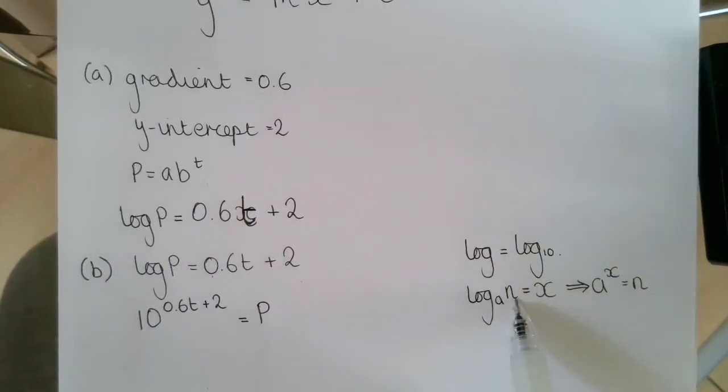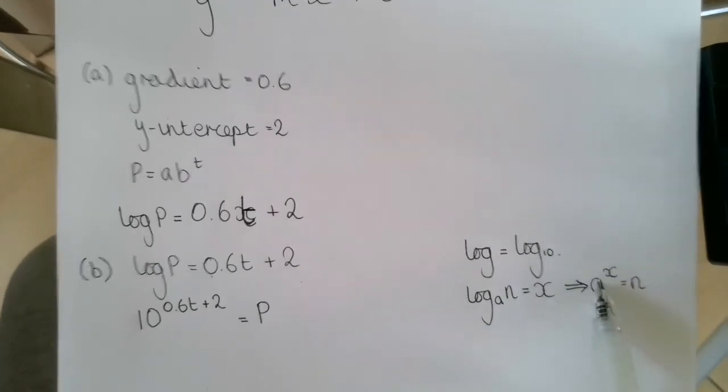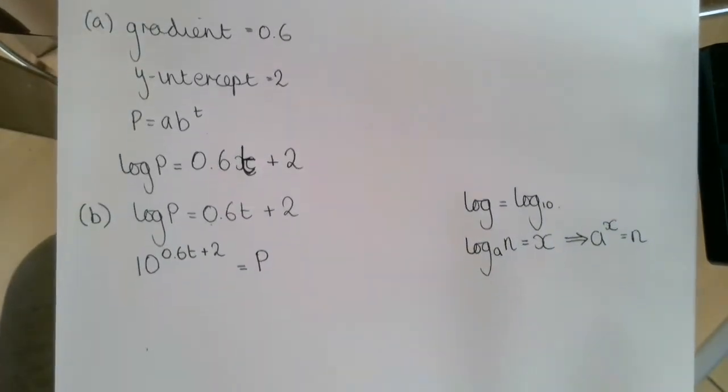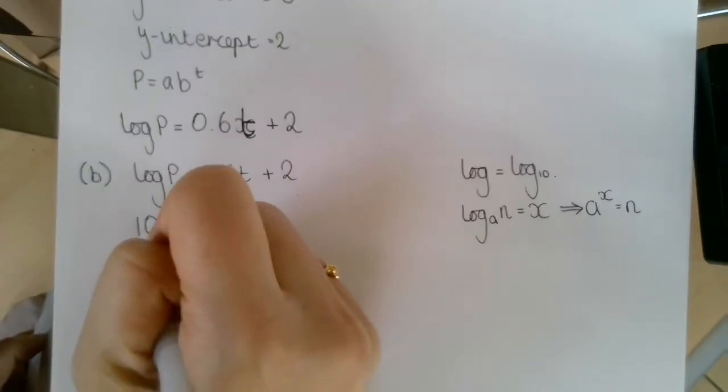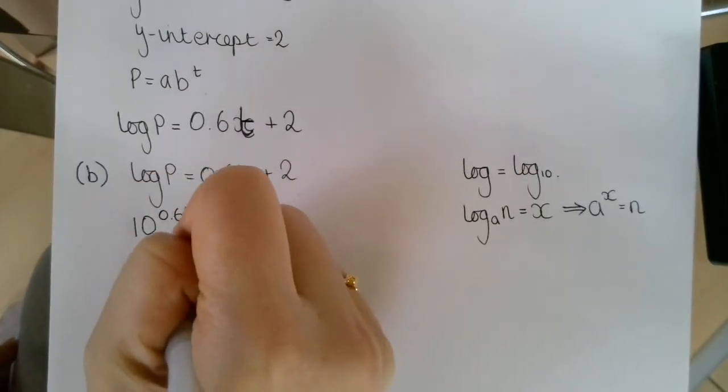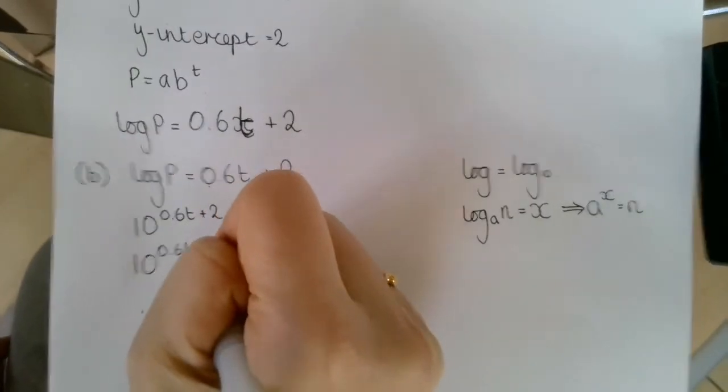That is equal to p. So I've just used this logarithm with base 10, which is in this form here, and rewritten it as that form there. So the left-hand side, we've got 10^(0.6t) multiplied by 10 squared.